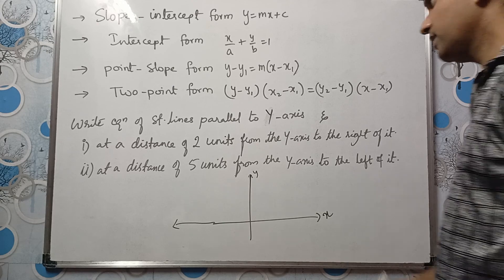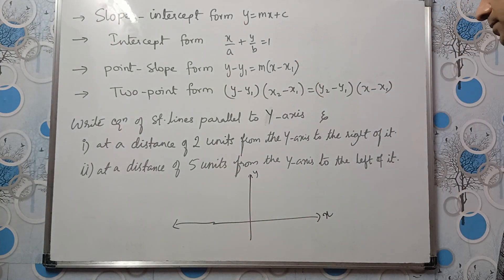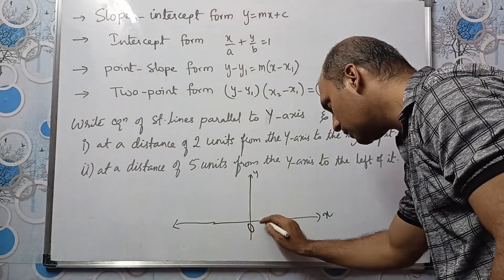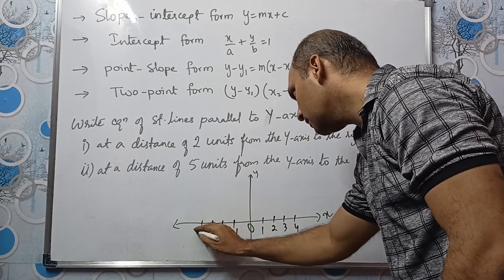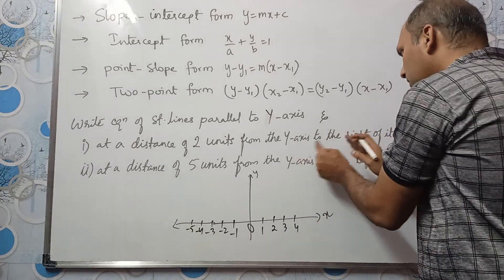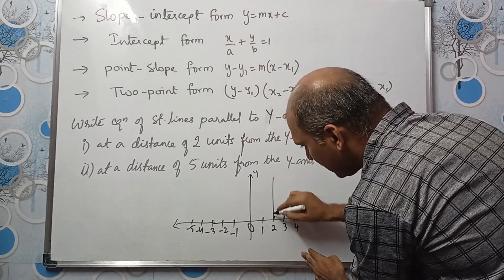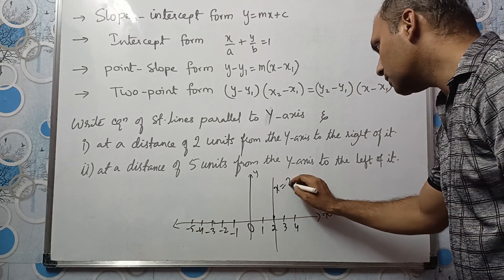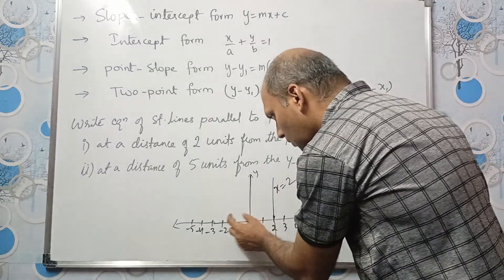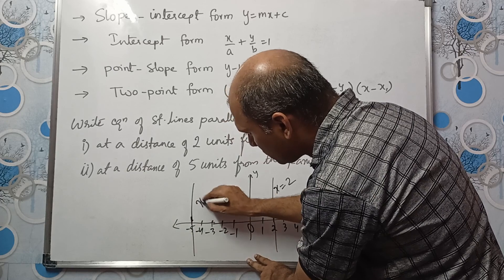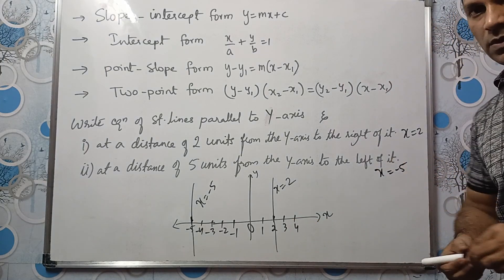Next problem: Find equations of lines parallel to the y-axis. Lines parallel to y-axis are vertical. Two units to the right of y-axis: x = 2. Five units to the left of y-axis: x = -5, or equivalently x + 5 = 0.